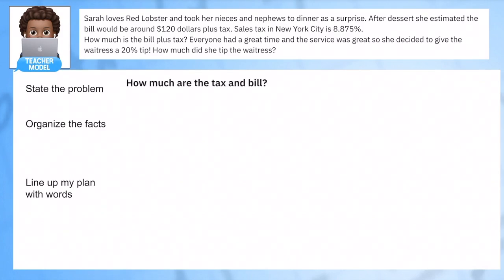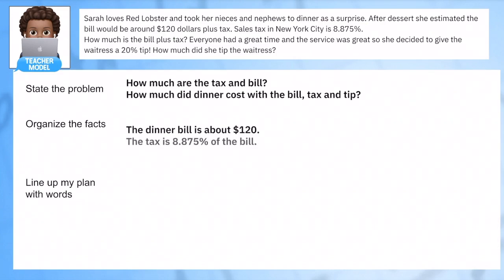Here's what we want to know: How much are the tax and bill for this meal? We're going to figure out two separate things. I'm going to go a little further and figure out the total cost of dinner with the bill, tax, and tip. This is real life math because when I go out places I always want to know if I have enough money. We know that dinner is about $120, we know what the tax is, and we know the tip is 20% of the bill.